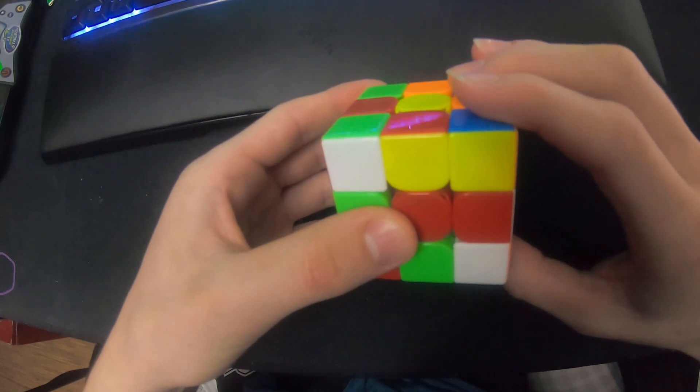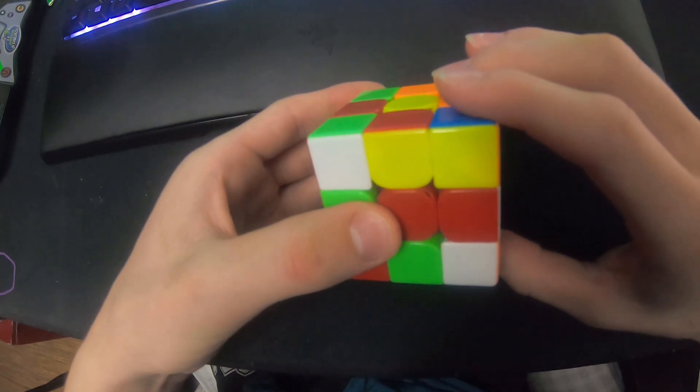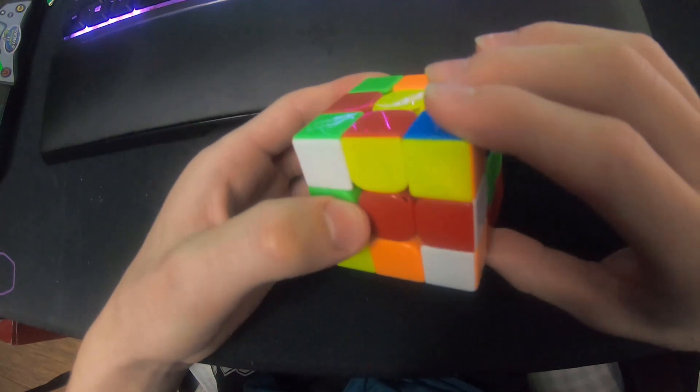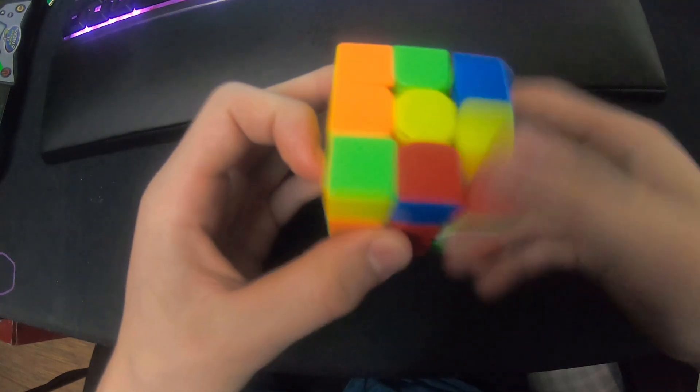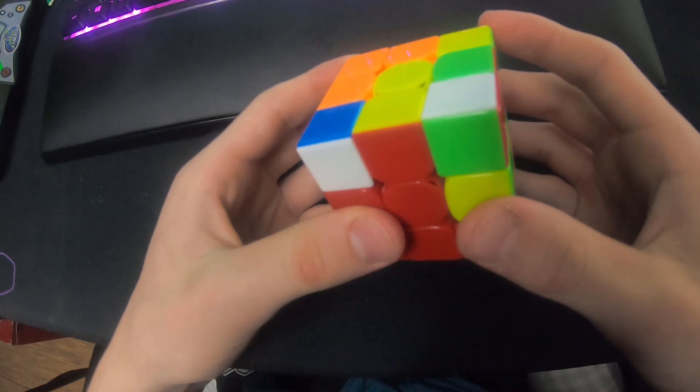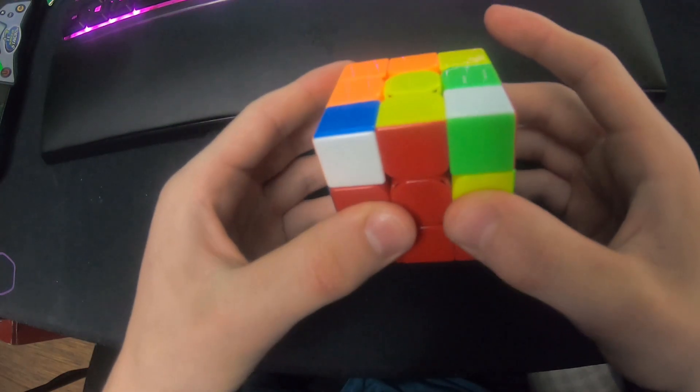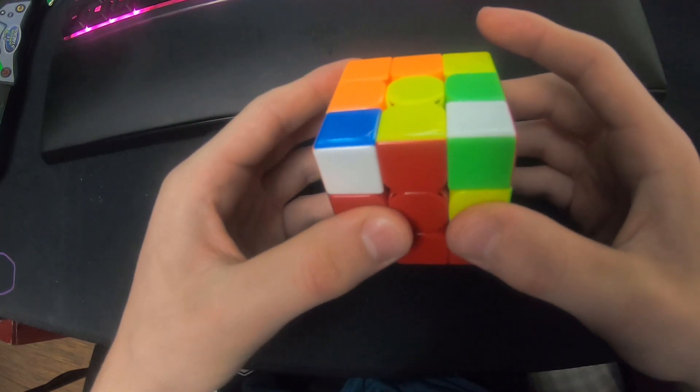So R D R F R2 U, R prime, insert the pair. From this position I'm sort of in a home grip - my left thumb might be a little more to the left than normal home grip, but that's fine.